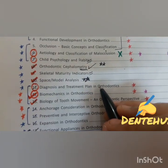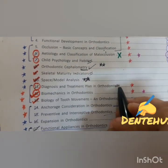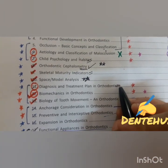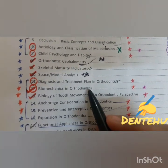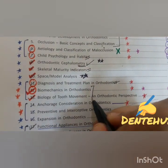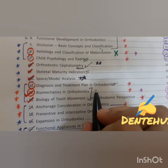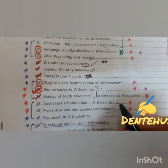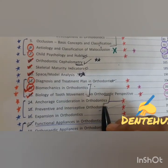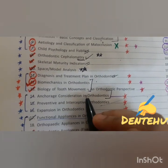Diagnosis and treatment planning is a generalized topic — even if left, it's not so important. Biomechanics and biology of tooth movement is again a very, very important topic. These need to be done by heart, along with anchorage. You will be getting sure-shot MCQs from these three topics.